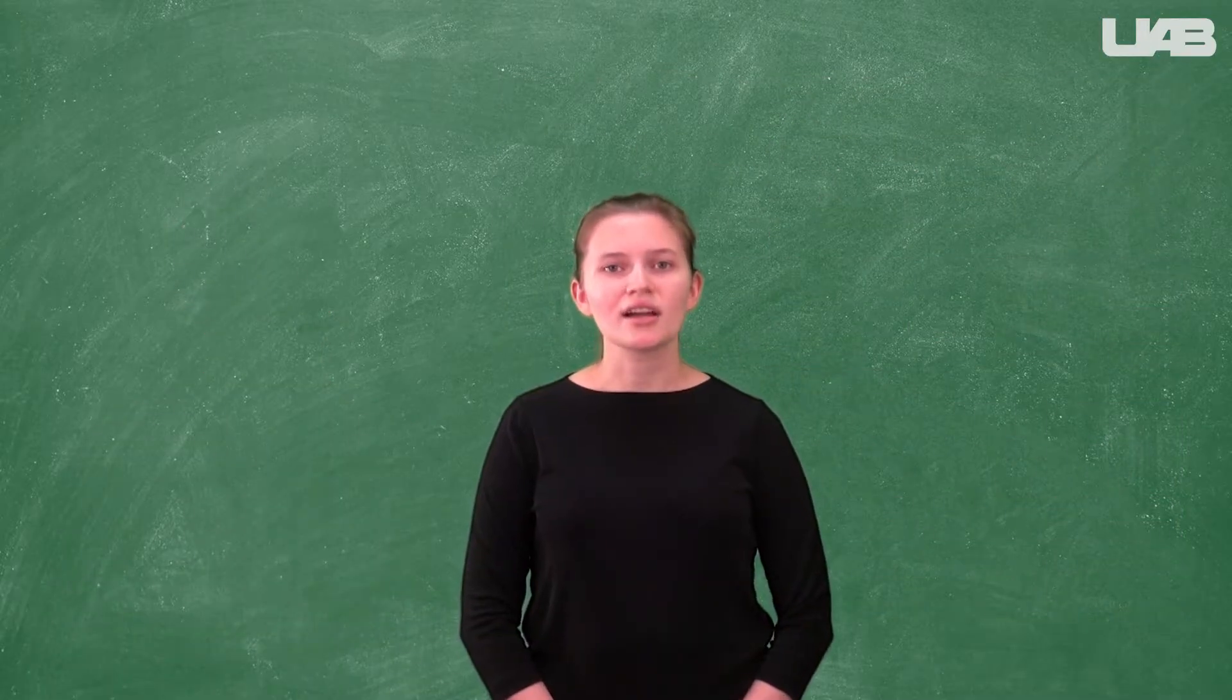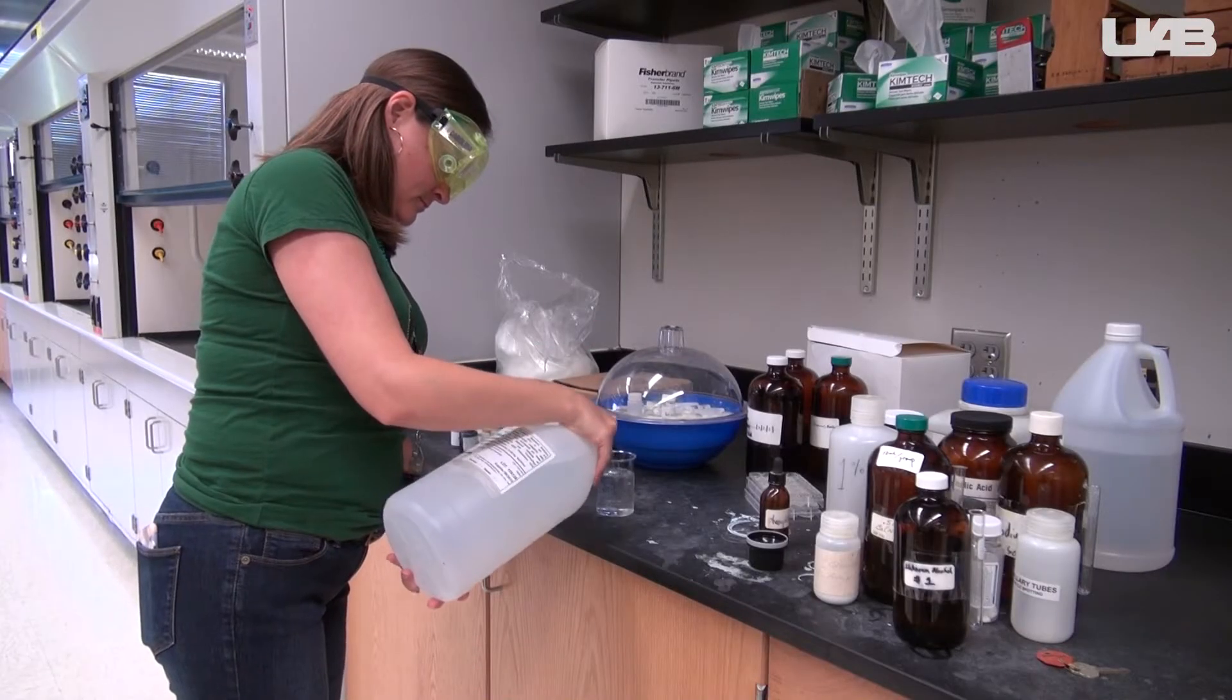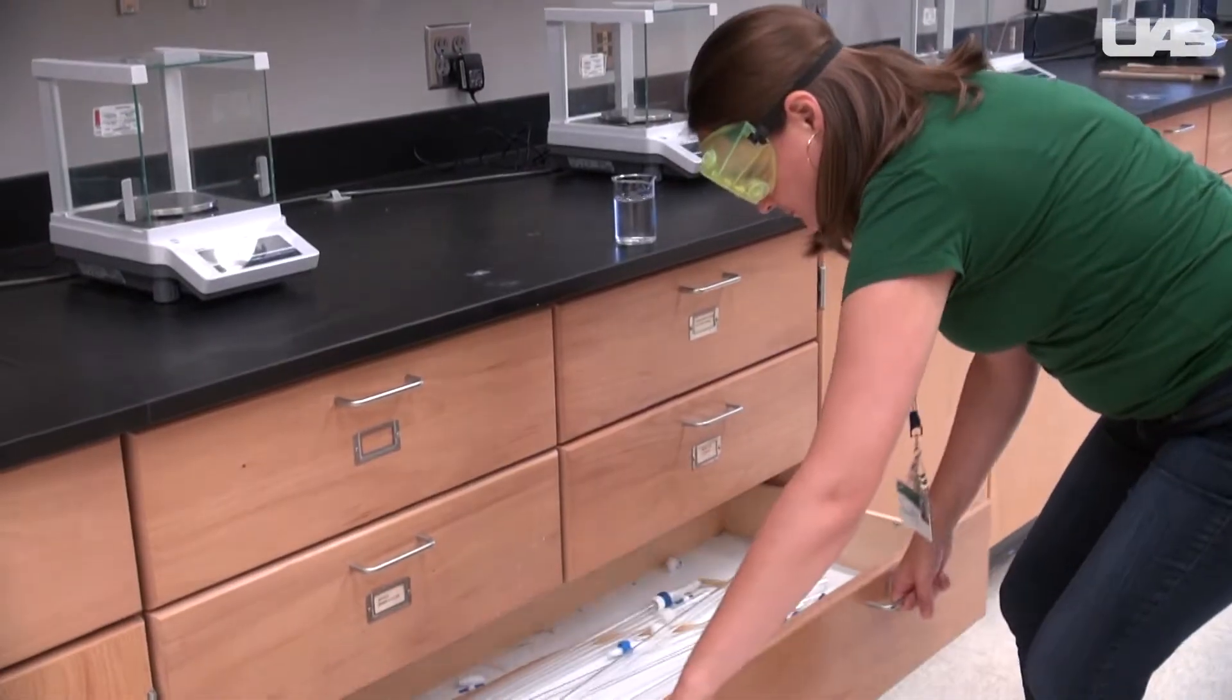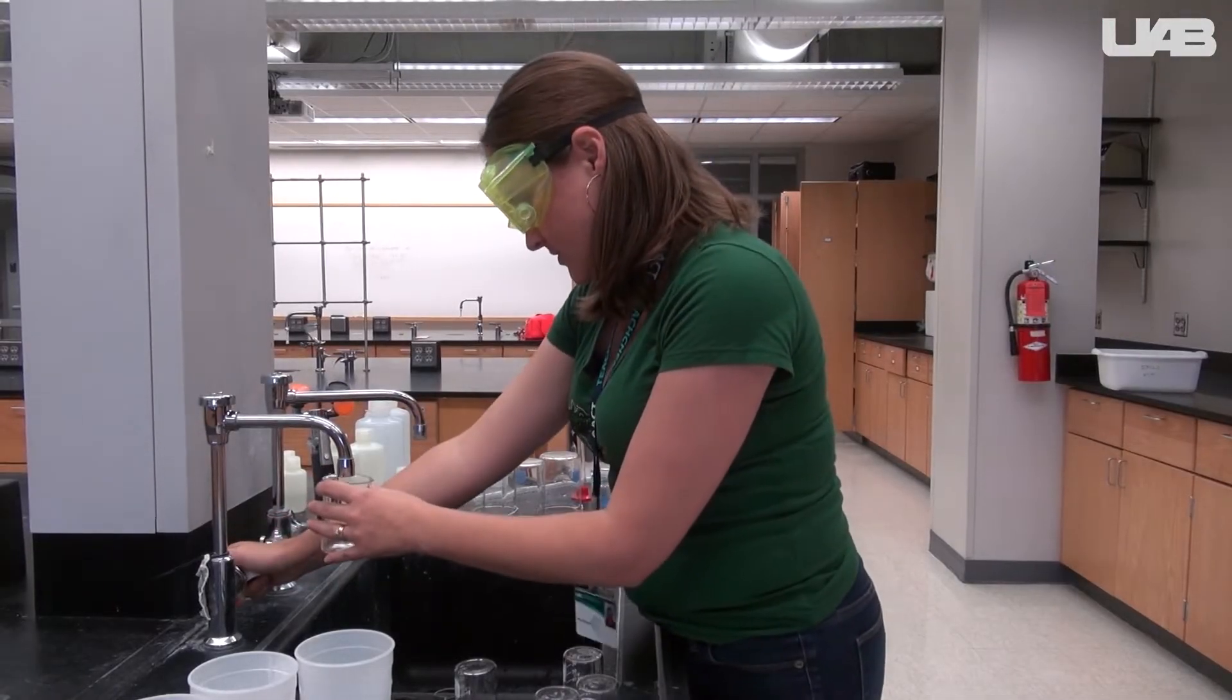Since the sodium hydroxide solution will be in the burette for all of our trials, we need to prime the burette before using it. First, get a beaker of the sodium hydroxide solution. Select a burette from the drawer, then go to the sink. Fill a second beaker with distilled water.